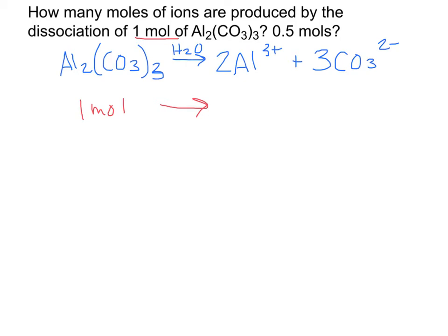This coefficient is one, meaning for every one mole of aluminum carbonate, we'll have two moles of aluminum ions form and three moles of carbonate ions form.